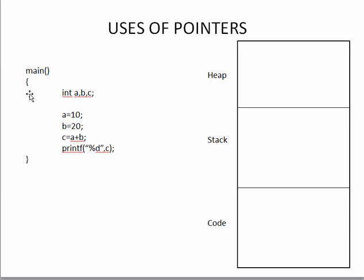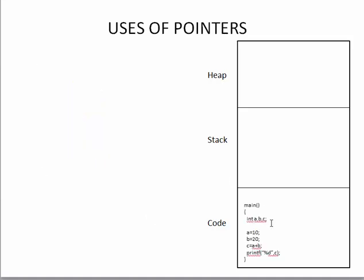Let's quickly understand how a program works. If you have a program and you want to run it, the program must be loaded into the main memory. The main memory is divided into three sections: code, stack, and heap. In this example I have taken a program with some variables, and when you run it, the program is loaded into the main memory in the code section.